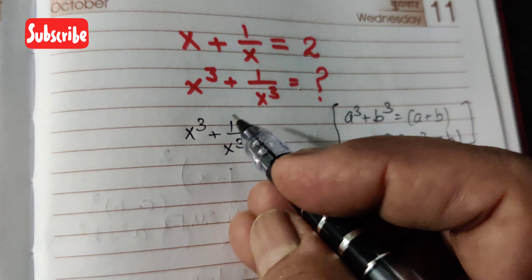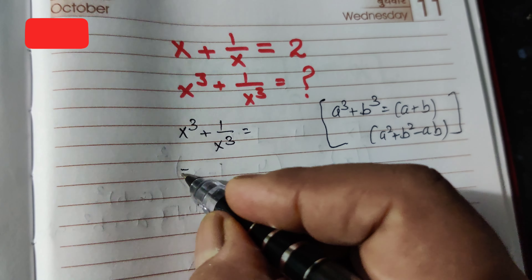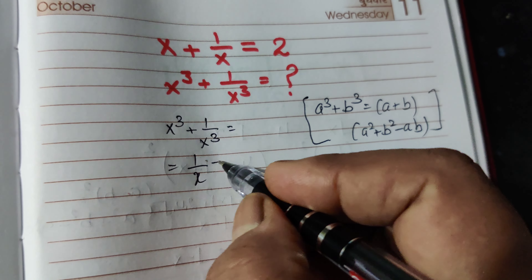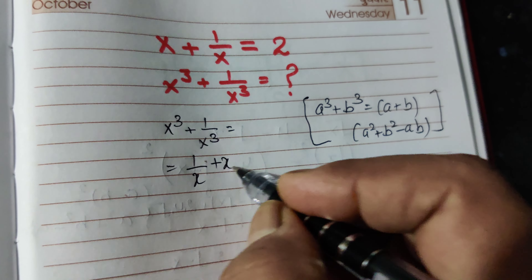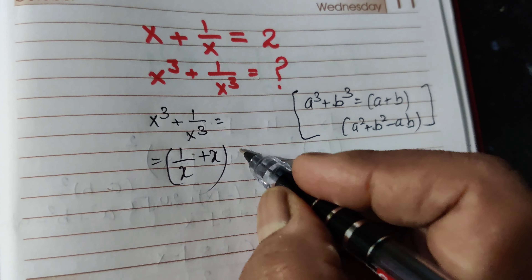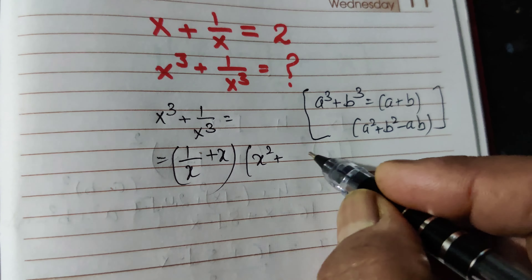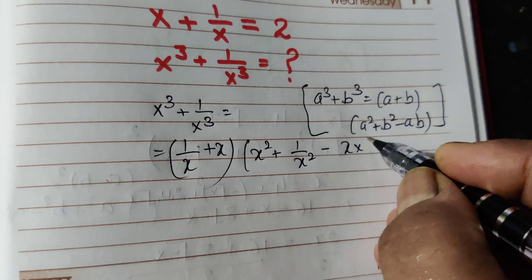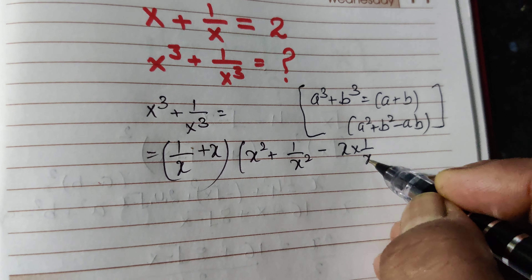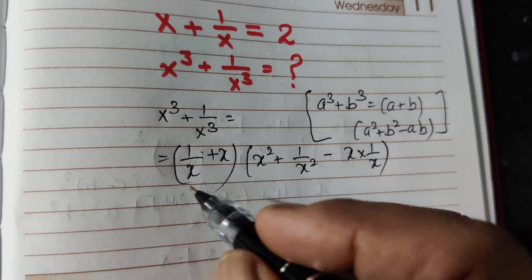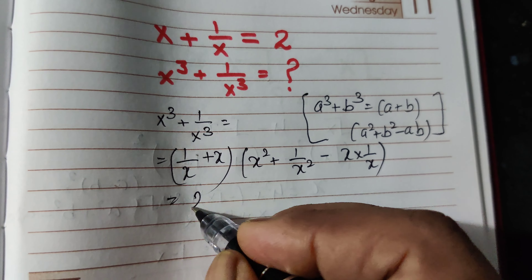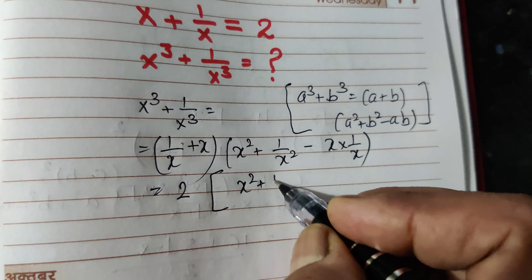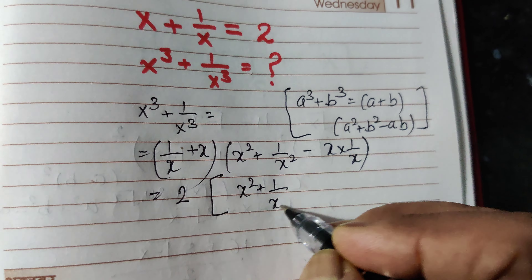So, x cube plus 1 by x cube equals x plus 1 by x, multiplied by x square plus 1 by x square minus x into 1 by x. We know that x plus 1 by x is 2, but we do not know the value of x square plus 1 by x square.